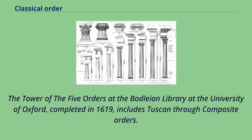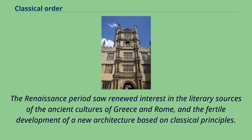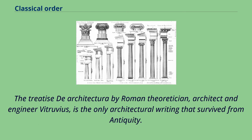The Tower of the Five Orders at the Bodleian Library at the University of Oxford, completed in 1619, includes Tuscan through Composite orders. The Renaissance period saw renewed interest in the literary sources of the ancient cultures of Greece and Rome, and the fertile development of a new architecture based on classical principles. The Treatise De Architectura by Roman theoretician, architect, and engineer Vitruvius is the only architectural writing that survived from antiquity.